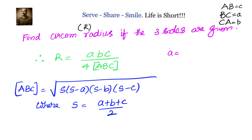Let's do one example to understand this. We take a standard triangle with sides 13, 14, and 15 — a triangle commonly used with Heron's formula because the area comes out to a clean integer value. We will calculate the circumradius for this triangle.